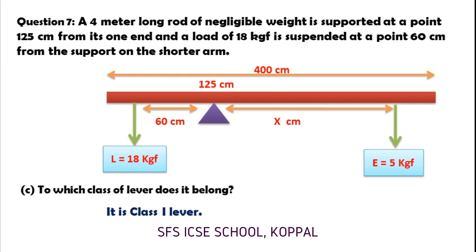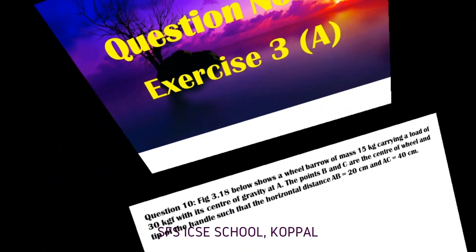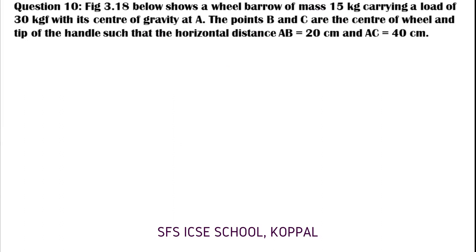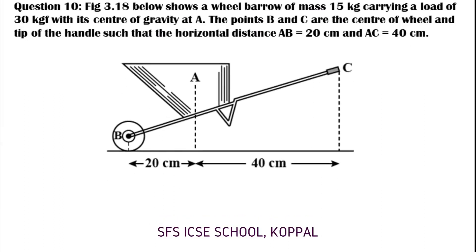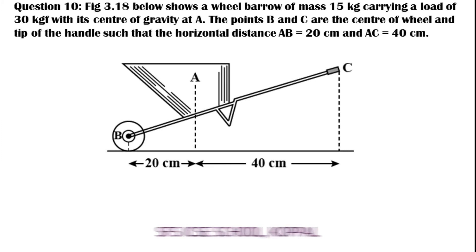Now let us solve Question 10 of Exercise 3a. The figure shows a wheelbarrow of mass 15 kg carrying a load of 30 kgf with its center of gravity at A. The points B and C are the center of the wheel and tip of the handle, such that the horizontal distance AB is 20 cm and AC is 40 cm.